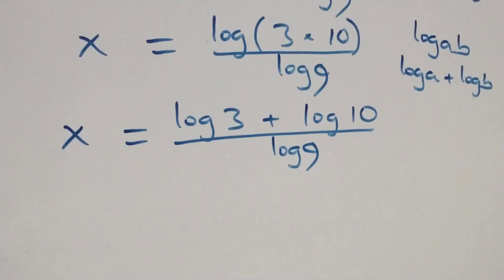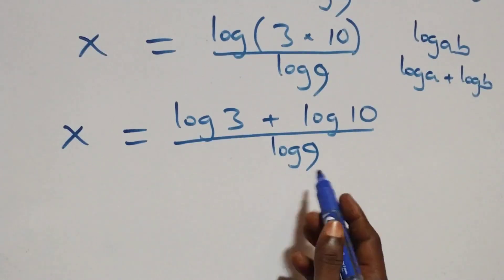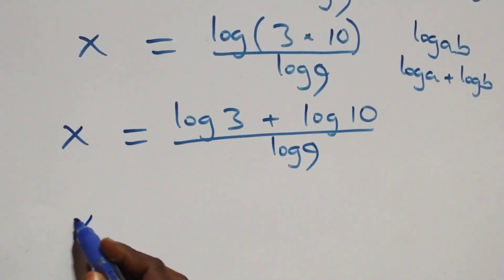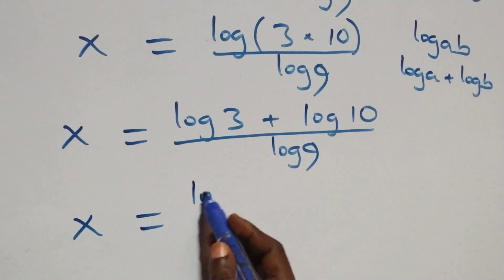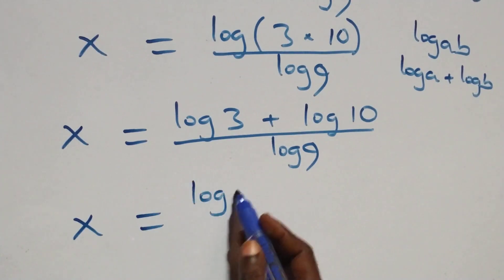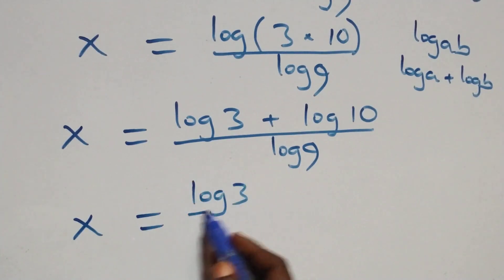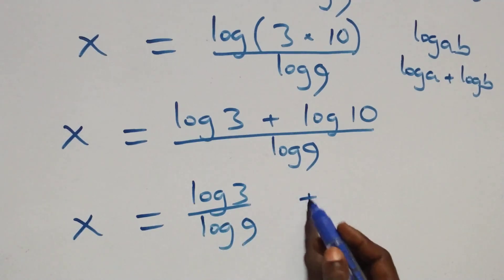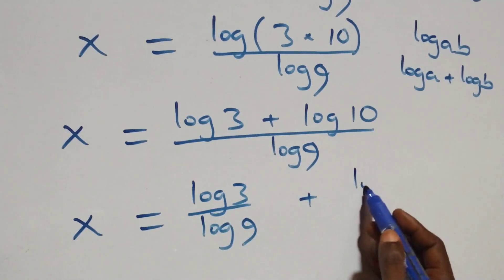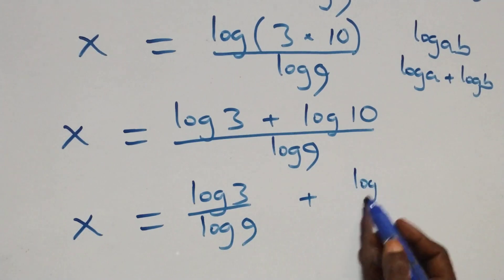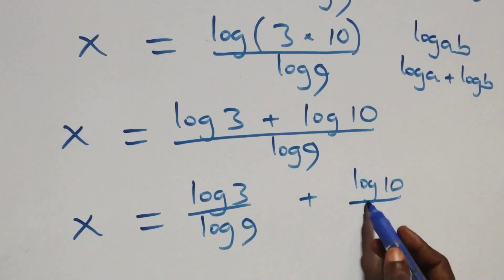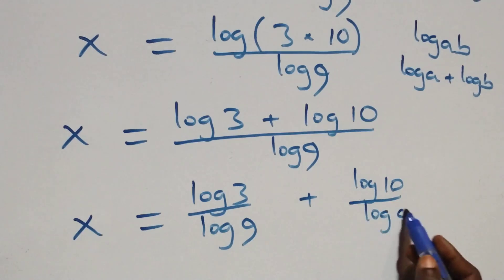At this, we have x equals to log 3 over log 9 plus log 10 over log 9.